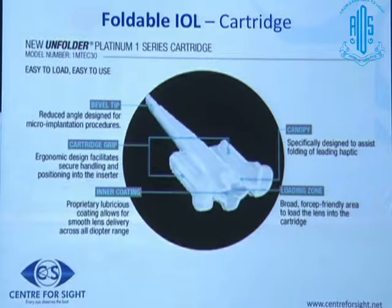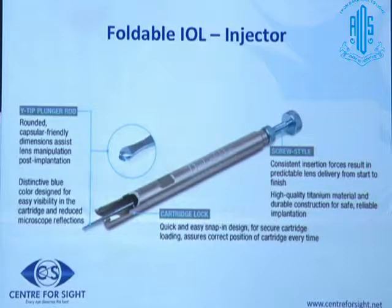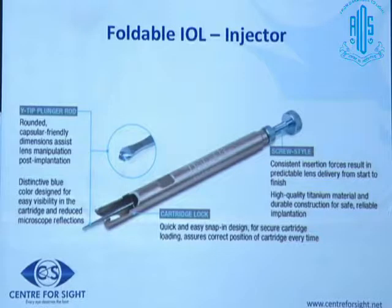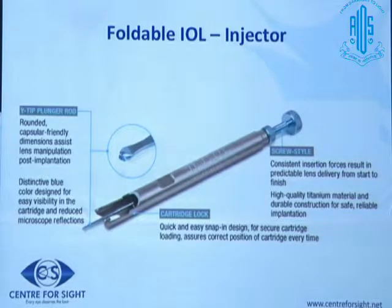The cartridge is fitted onto the injector, the intraocular lens is loaded into the cartridge, and the push plunger advances the lens. There are two types of injector systems: a push type and a screw type. The screw type is preferable because you don't get sudden violent jerks — with the push type, if there is resistance and you push hard, you could forcefully displace the IOL, as has been seen at conferences.